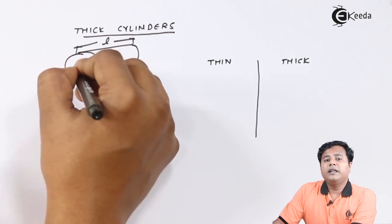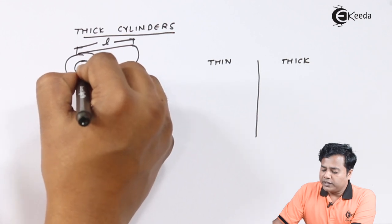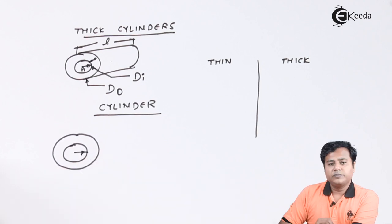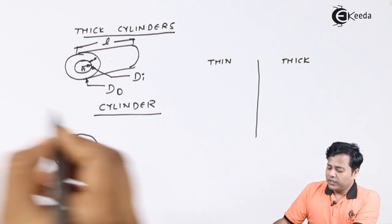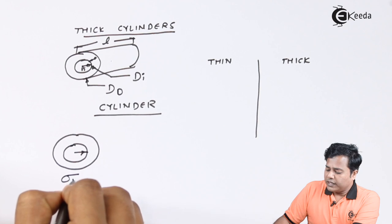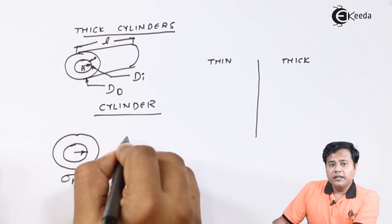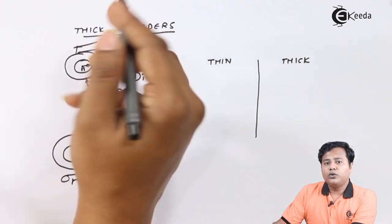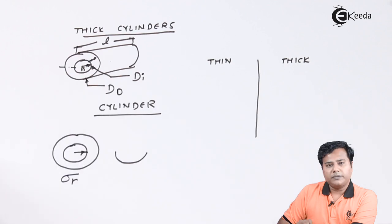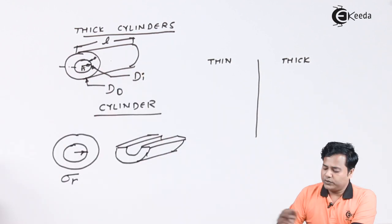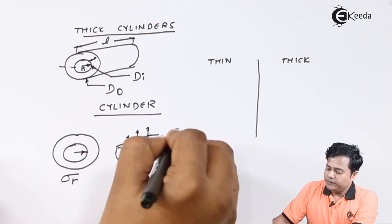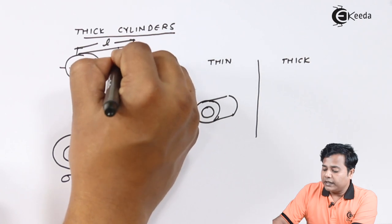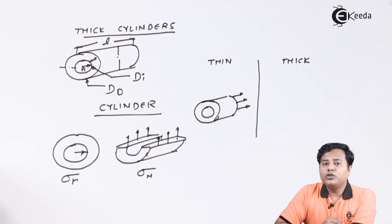Let us say some fluid is kept inside the cylinder with some internal pressure acting on it. When that pressure acts along the radial direction, a stress is generated along the radial direction — that is called radial stress. When we cut the cylinder and look at the walls, the stresses built up in the walls are called hoop stresses. When the cylinder is cut along its length, these are called longitudinal stresses.